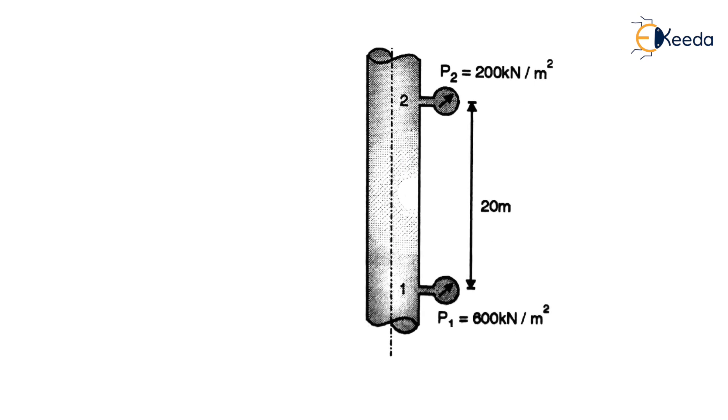Let's consider the diagram of the pipe - a vertical pipe with a pressure measuring device having a reading of 600 and another pressure measuring device reading 200. There are two different levels, hence we have to consider the energy equation.